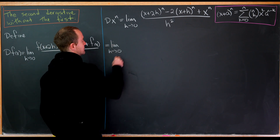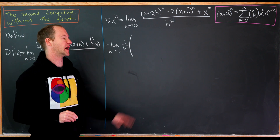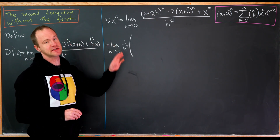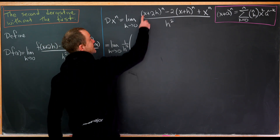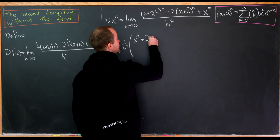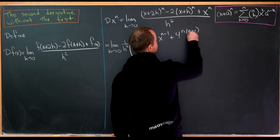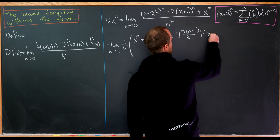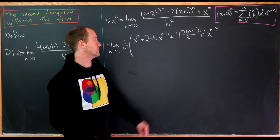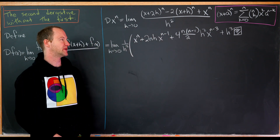Taking the limit as h goes to 0 with 1/h² out front, we expand (x + 2h)^n: we get x^n plus 2nh·x^(n−1) plus 4·(n(n−1)/2)·h²·x^(n−2), and then a bunch of other terms all attached to h³ or higher, which we group into a box.